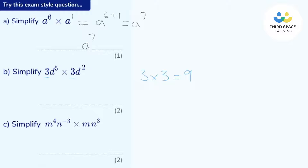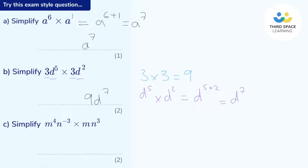Now let's look at the d's. We've got d to the power of five and we're going to multiply that by d squared. The laws of indices tell me that when we have the same base — d — and we multiply, I can add the powers. So that's d to the power of five plus two, which is d to the power of seven. Putting it all together, the final answer is 9d to the power of seven.